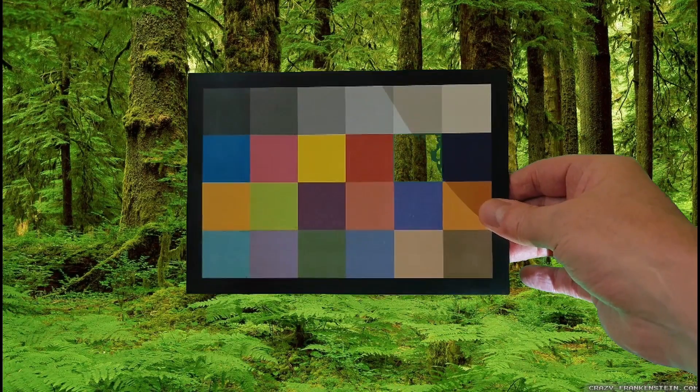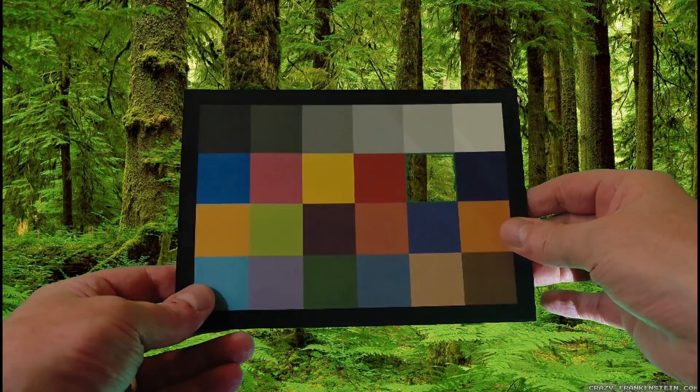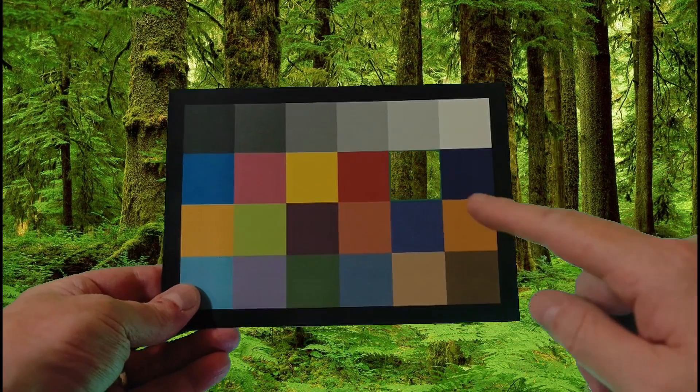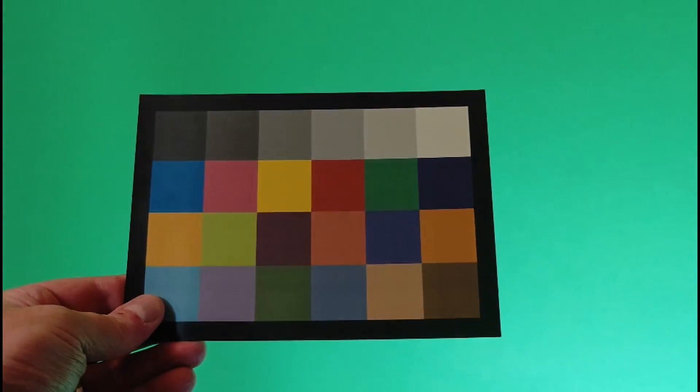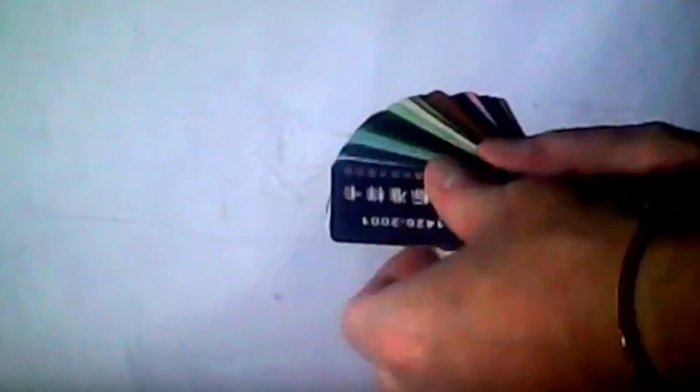But chroma keying isn't just limited to the color green. In fact, any background color can be used, with the caveat that it shouldn't clash with anything in the foreground. So I thought I would try a different color, one that is invisible to human eyes.